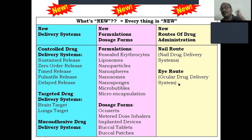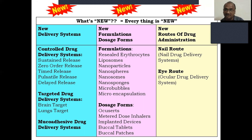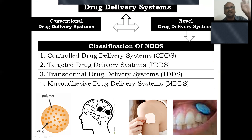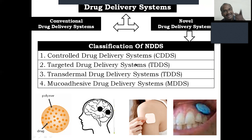Ocular drug delivery system: we deliver the drug into the eyeball and it enters the systemic circulation also from that. Here we can see the classification of drug delivery systems — conventional drug delivery system, also called traditional drug delivery system, is the old system. Whereas novel drug delivery system is the new one. We are studying novel drug delivery system; the subject name is novel drug delivery system, classified into mainly four categories.